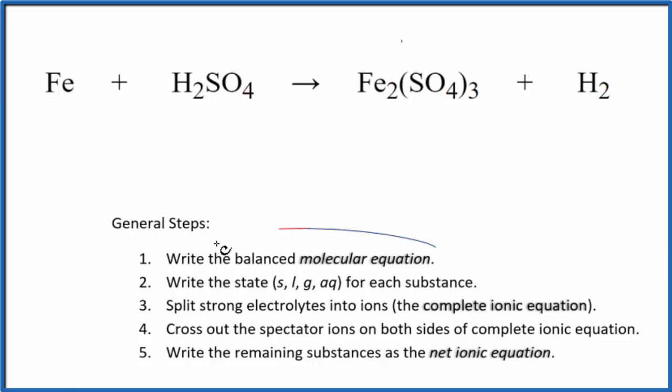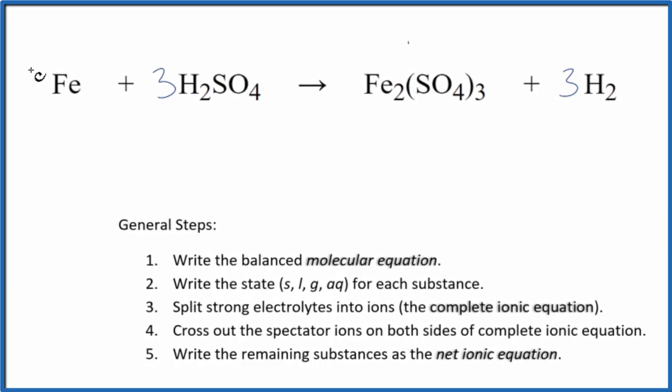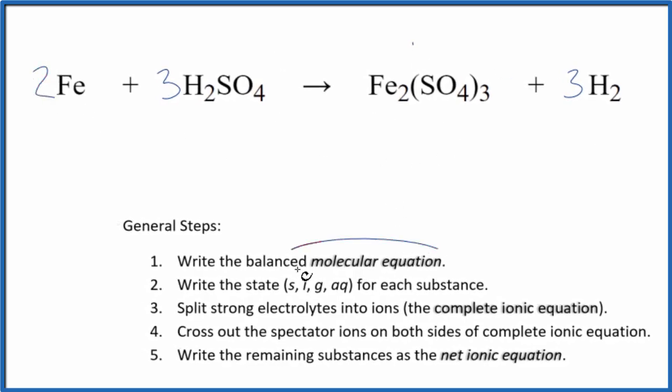So to balance the net ionic equation we have to balance the molecular equation first. I can see that I have these three sulfates here and just one here so I'm gonna put a three in front of the H2SO4. Now I have six hydrogens but I could just put a three here, and then two irons just one here let's put a two here. So this is the balanced molecular equation.